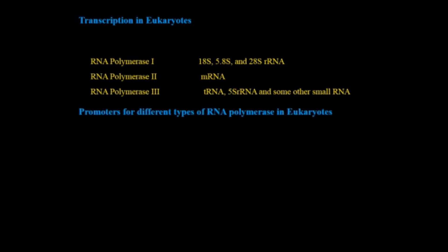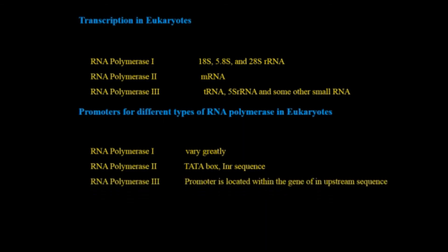Transcription in eukaryotes: Like replication, eukaryotic transcription process is very complicated. It doesn't have only one polymerase, it has many polymerases. RNA polymerase I polymerizes 18S, 5.8S, and 28S rRNA, whereas polymerase II transcribes messenger RNA, and polymerase III transcribes tRNA, 5S rRNA, and some other small RNAs. For each polymerase, there are specific promoters. For polymerase I, the promoter sites vary greatly. For polymerase II, it has TATA box and INR sequence. For RNA polymerase III, the promoter is located within the gene or in upstream sequence.